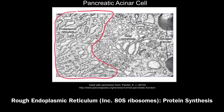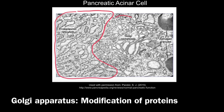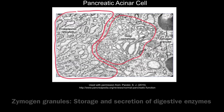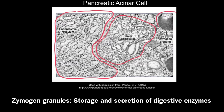In this rough endoplasmic reticulum you would get protein synthesis — production of those enzymes such as pancreatic amylase. We can also see the Golgi complex, otherwise known as the Golgi apparatus, where modification of those proteins takes place.